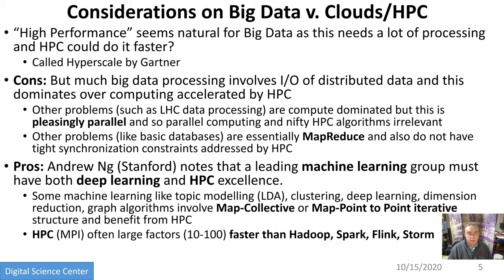Big data, you would think, would need high performance because that's what big means. So we talk about high performance computing — we could talk about big performance computing. Obviously big data needs big performance, and so using HPC, big data should run faster. This concept is called hyperscale and is a transformational technology according to Gartner. But it's a little more subtle, because maybe the big data processing involves lots of input-output, meaning a lot of distributed data, so quite how you accelerate that is not so clear.